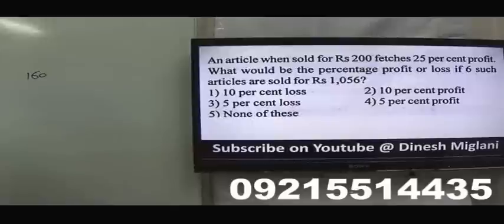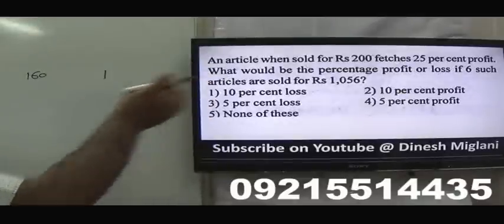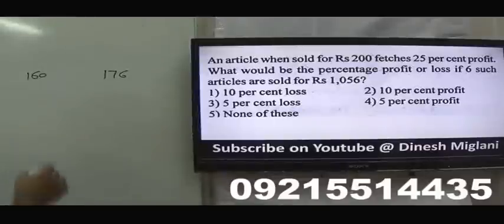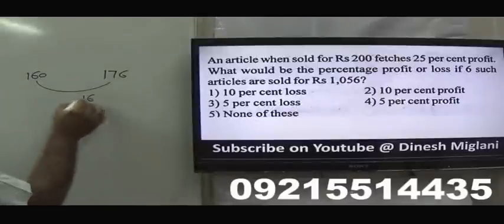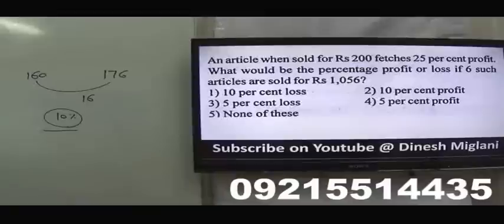What will be the percentage profit or loss if 6 such articles are sold for 1056? So the selling price of one article is 1056 divided by 6. That gives 176. Now if cost is 160 and selling price is 176, profit is 16. Profit percent is 10%. Hence answer is 10% profit.